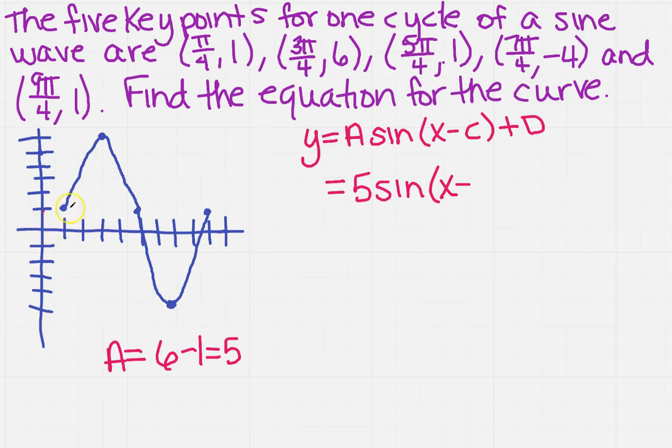And since it goes through the origin, we notice it's been moved over to right here, which is the pi over 4. So that means we've had a phase shift of pi over 4 in the right direction. So that's why it stays negative.